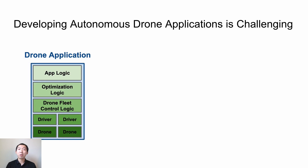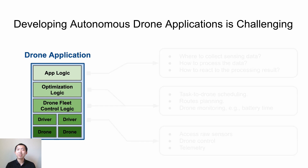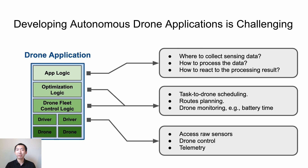However, developing autonomous drone applications is actually very challenging. Drone applications today involve many components, from very high-level application logic to the low-level drone control logic. For example, in a sensing application, the application logic may need to figure out where the drone should go to collect sensing data, how to process the collected data, and how to react to the results. The optimization logic, together with drone fleet control logic, may need to figure out how to schedule a fleet of drones and find the most efficient routes. This makes it very challenging to build good drone applications.